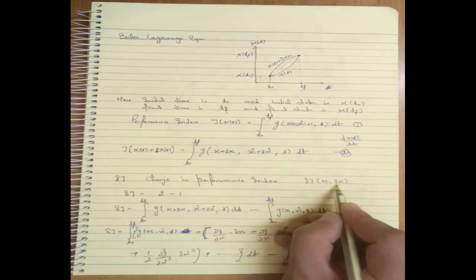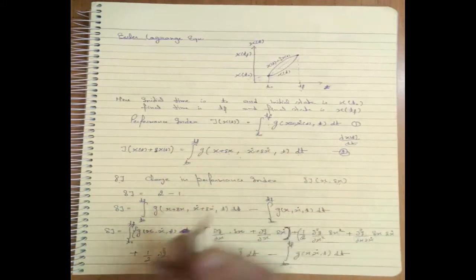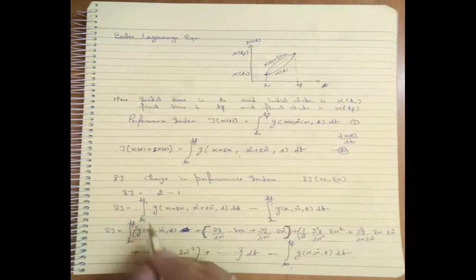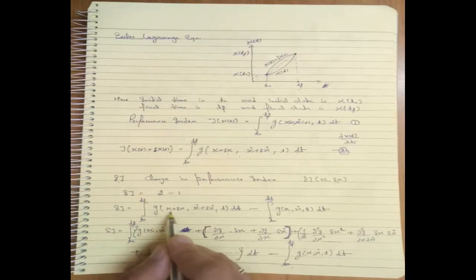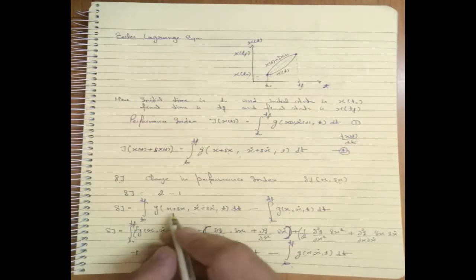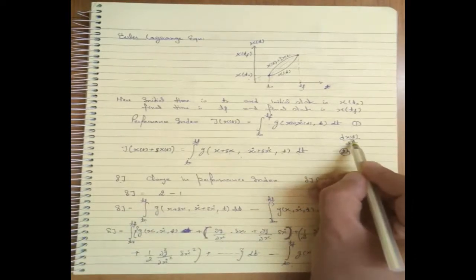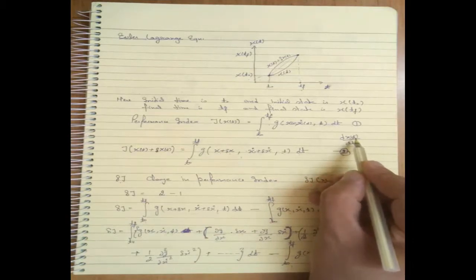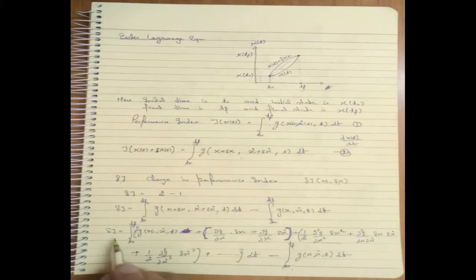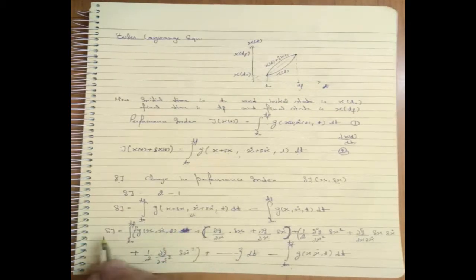δJ is equal to equation 2 minus equation 1. So δJ = integral from T0 to Tf of G(X + δX, X-dot + δX-dot, T) dT minus the original integral. Here, X-dot denotes differentiation with respect to time of the function X(T). We want to expand this function δJ using a Taylor series expansion.